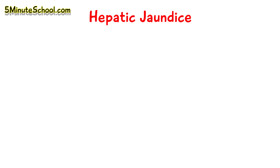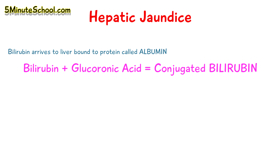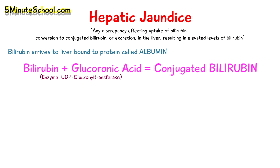Hepatic jaundice is the second type. In this type there is usually a problem with the hepatocytes of the liver. The passage of bilirubin through the liver involves bilirubin reaching the liver bound to a protein called albumin. The bilirubin in the liver is then combined with glucuronic acid to form conjugated bilirubin, and the main enzyme involved in this conversion is UDP-glucuronyl transferase, after which it is excreted from the liver. Any discrepancy affecting the uptake of bilirubin or the conversion to conjugated bilirubin is classed as hepatic jaundice — including defects with UDP-glucuronyl transferase.